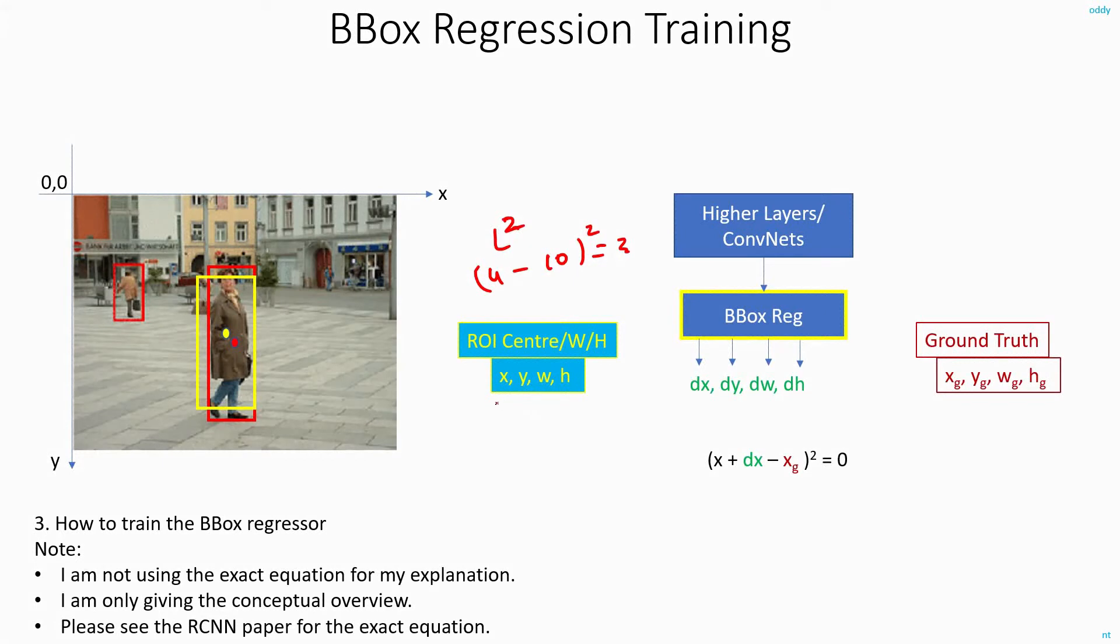Similarly here, you already have the x, y, w, and h from your selective search or edge boxes. And here initially, your bounding box regressor will output some random values of dx, dy, dw, and dh.